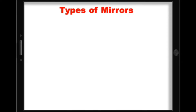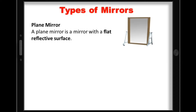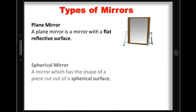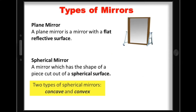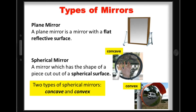There are two common types of mirrors. We have a Plane Mirror, which is a mirror with a flat reflective surface, and is commonly used by us to check ourselves every day. Next, we have a Spherical Mirror, which has the shape of a piece cut out of a spherical surface. There are two types of spherical mirrors — concave and convex — which will be further discussed in the next video lesson.